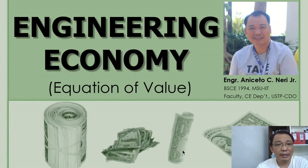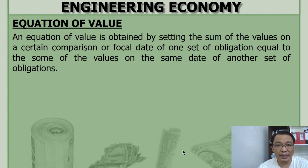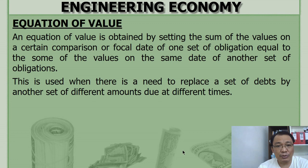In this video, I'm going to discuss about what we call as the equation of value. The equation of value is obtained by setting the sum of the values on a certain comparison or focal date of one set of obligations equal to the sum of the values on the same date of another set of obligations. This is used when there is a need to replace a set of debts by another set of different amounts due at different times.